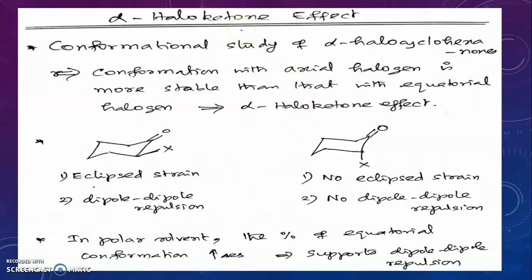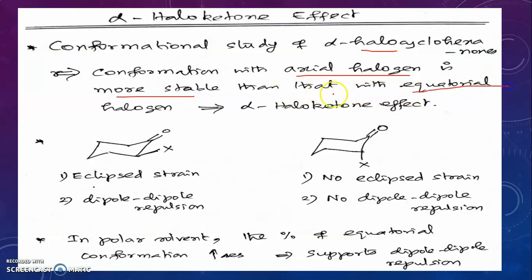The next important effect in cyclohexanone is the alpha-halo-ketone effect: conformational study of alpha-halocyclohexanone. If we have a halogen at the alpha position, conformational studies reveal that the conformation with axial halogen is more stable than that with equatorial halogen. This is called the alpha-halo-ketone effect.